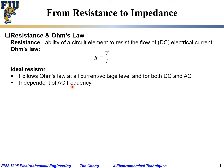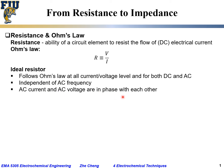Whether it's high frequency — kilohertz, megahertz, or even higher — or very low frequency such as one hertz or even lower. For an ideal resistor, the AC current and the AC voltage are in phase with each other, meaning both the current and the voltage reach zero at the same time, reach maximum at the same time, and go back to zero at the same time — they are in phase.